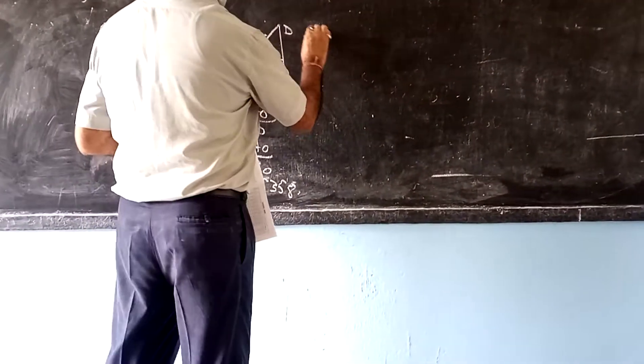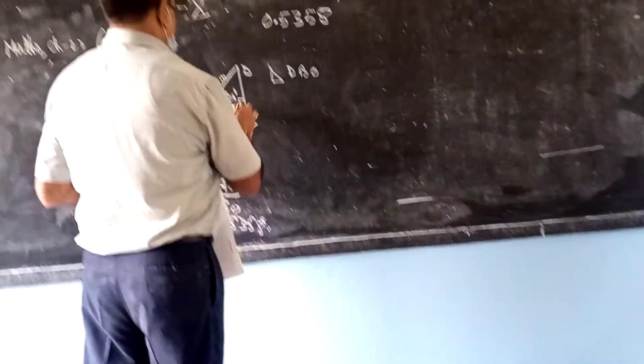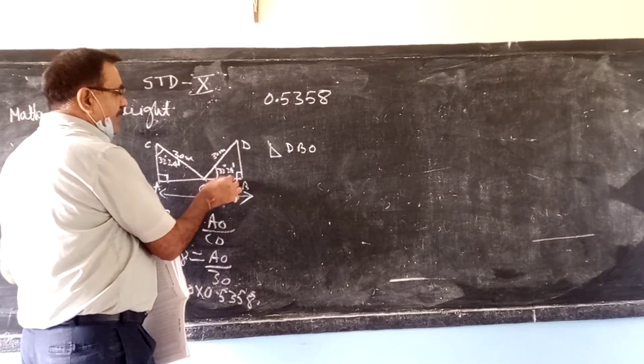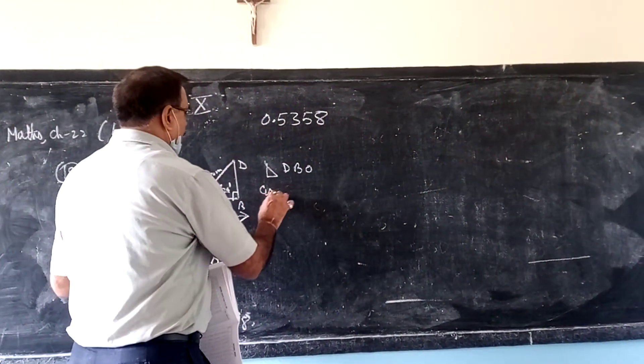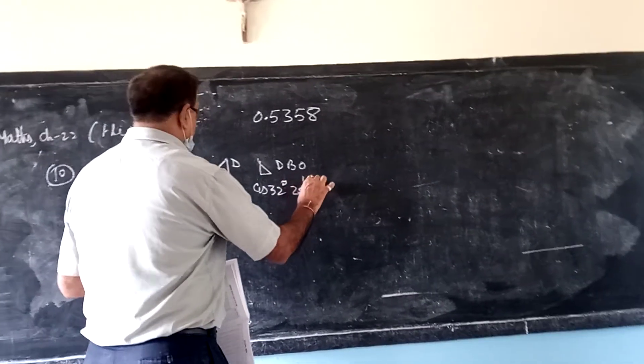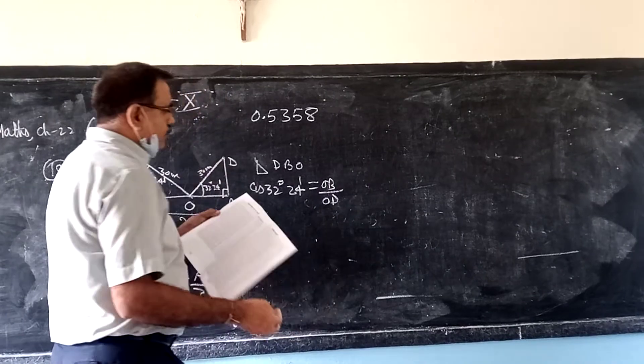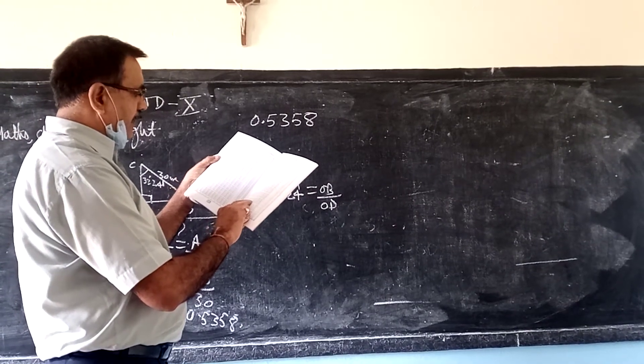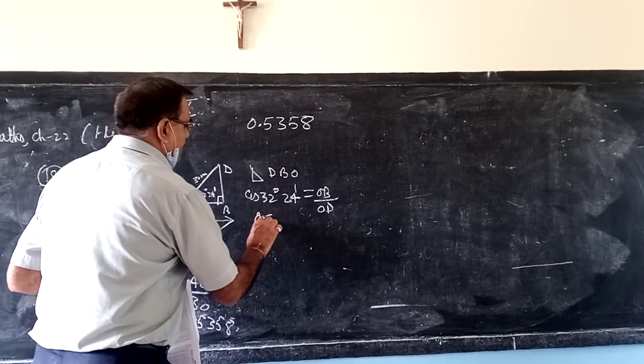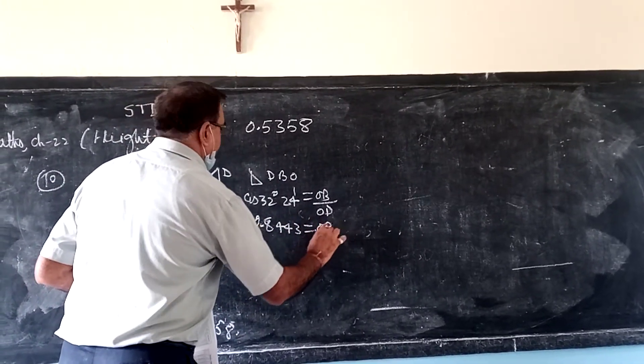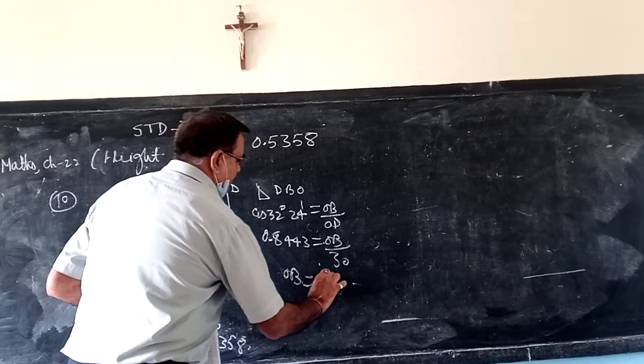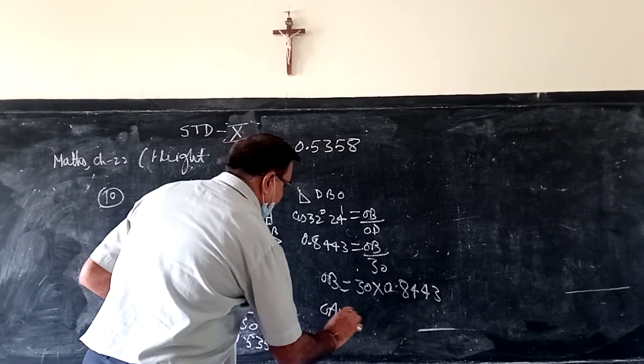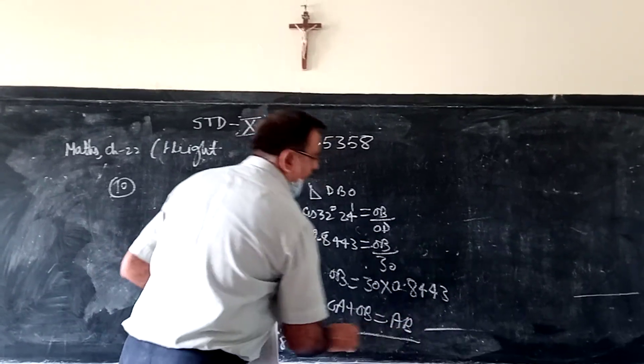Now for the second part, triangle DEO. When we take this angle, this is base and this is hypotenuse. Base by hypotenuse is cosine. Cos 32 degrees 24 minutes equals OD by OE. Cos 32 degrees 24 minutes is 0.8443. OD we have to find, OE is given 30. So OD equals 30 into 0.8443. Add this, OA plus OD, you will get AD. That is okay. Thank you.